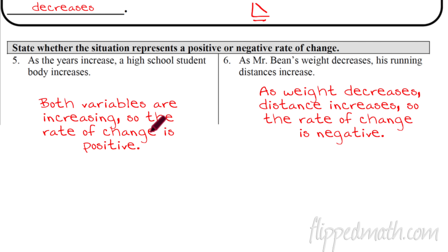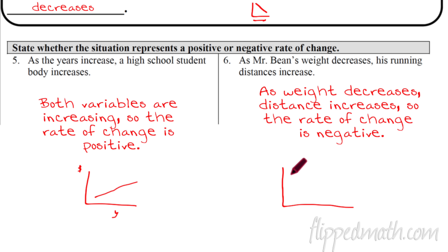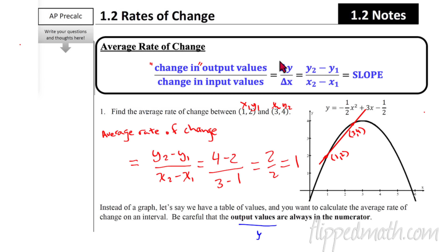Number five: as years increase, the high school student body also increases — that's positive. Number six: as Mr. Bean's weight decreases, his running distance increases. As we go left on the x-axis (weight decreasing), distance goes up — that's also a positive rate of change between those two variables. That's positive and negative rate of change, which we already know from positive and negative slope. Good luck on your mastery check — remember, it's always nice to be important, but it's more important to be nice!